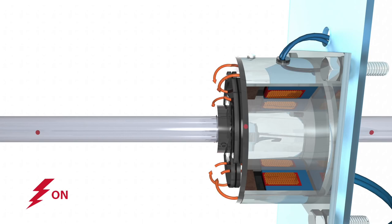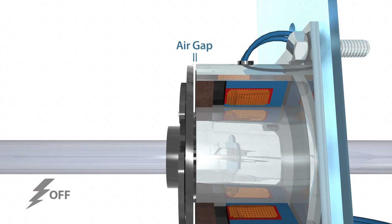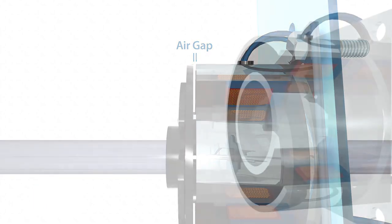When current or voltage is removed from the brake, springs hold the armature away from the hub surface creating a small air gap.